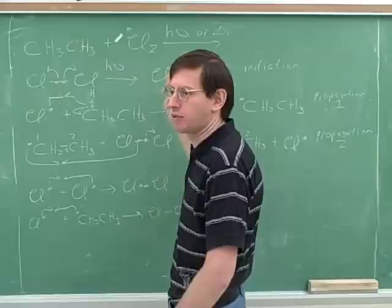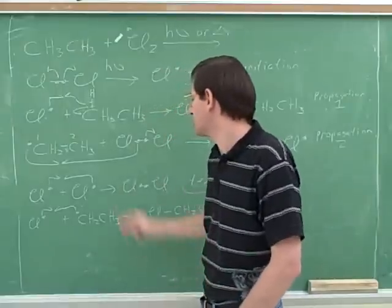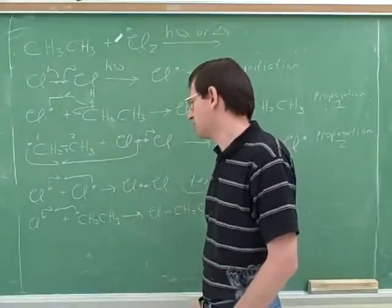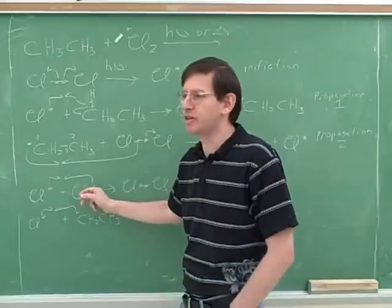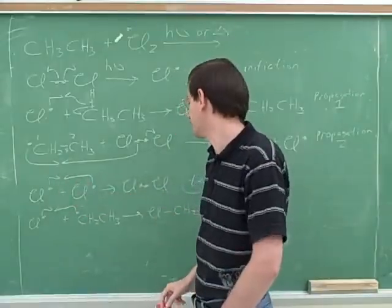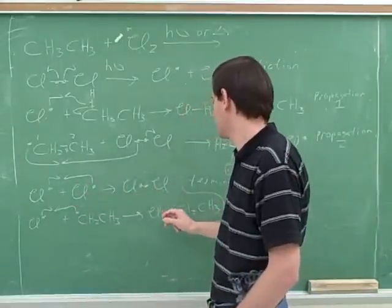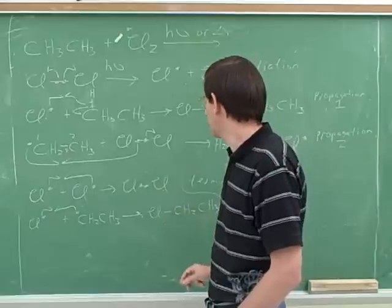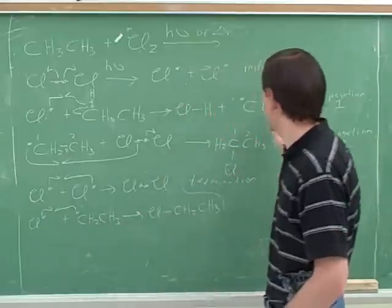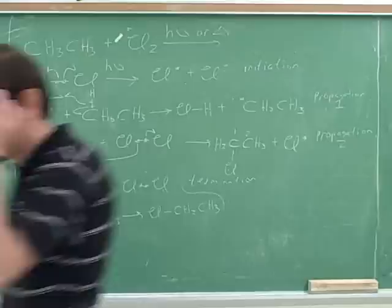But this is very hard because we're only doing bad things. We're only making radicals without getting rid of them. And of course, these termination steps are very easy. They just don't happen very much because it's just unlikely that two radicals would bump into each other. But if two radicals do bump into each other, they really want to stop being radicals. So let's see if you can show the mechanism for what happens if two ethyls bump into each other.